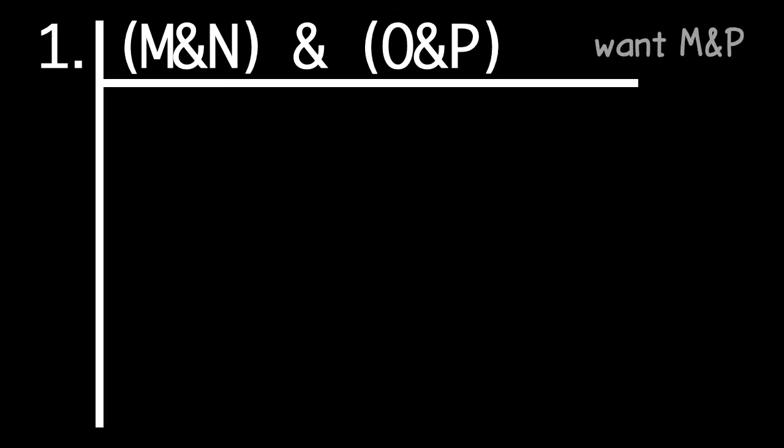We set up the proof by writing the premise on line 1. The horizontal line underneath it means that everything after that needs to be justified by a rule. I've written WANT M and P by the premise. That's not formally part of the proof, but it's a note to ourselves about how the proof needs to end. Once we can write down M and P, we're done.